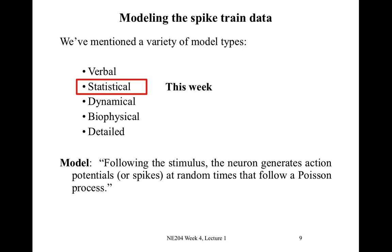The model we're going to consider, which is really a statistical model, is the following: following the stimulus, the neuron generates action potentials, or spikes, at random times that follow a Poisson process. That's the model we will develop today, and our goal is to try to understand what this means.